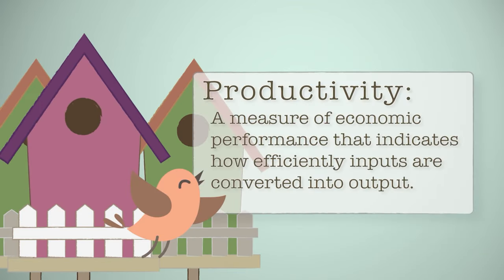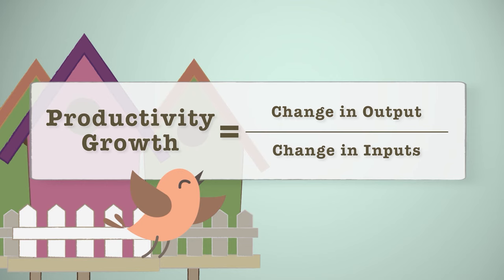Productivity is a measure of economic performance that indicates how efficiently inputs are converted into output. Growth in productivity is measured by dividing the change in output over time by the change in inputs over time.